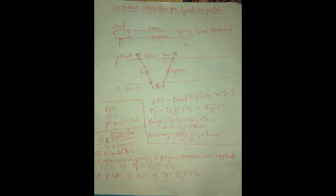Client P sends a request to server S at time t0. The server reads the request and takes a small amount of time called ts, which is the server processing time used for calculation at the server side. After processing, the server gives the response back to the client.